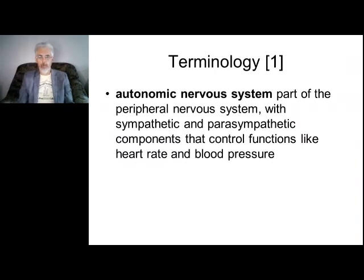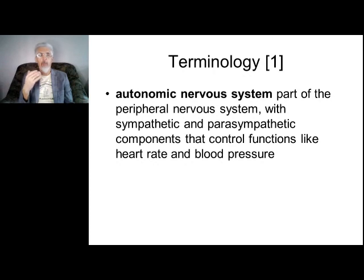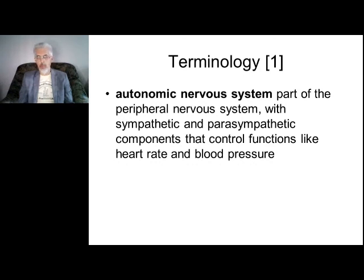The autonomic nervous system is the part of the peripheral nervous system which includes sympathetic and parasympathetic components that control functions like heart rate and blood pressure. The autonomic nervous system controls homeostasis, metabolic processes, temperature, blood pressure — it controls everything. It is the system that controls our balance.